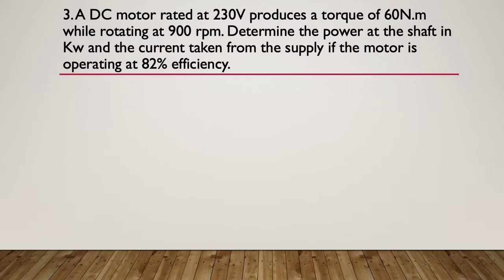Question three, a DC motor is rated at 230 volts, produces a torque of 60 Newton meters while rotating at 900 RPM. Determine the power at the shaft in kilowatts and the current taken from the supply if the motor is operating at 82% efficiency.